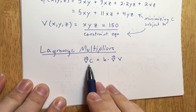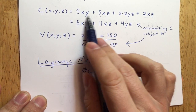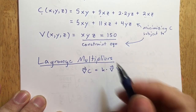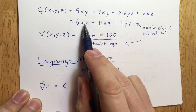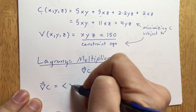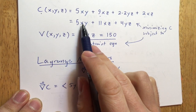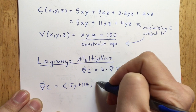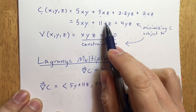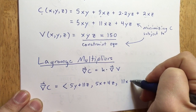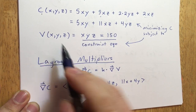We have to compute the gradient of C — that's the X derivative, the Y derivative, and the Z derivative. The X derivative of C is 5Y + 11Z. The Y derivative is 5X + 4Z. And the Z derivative is 11X + 4Y. That's the gradient of C. We also need to compute the gradient of V.